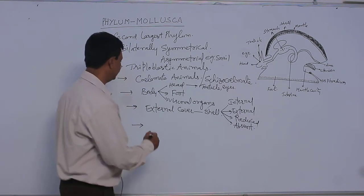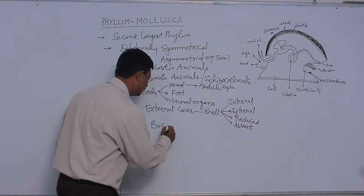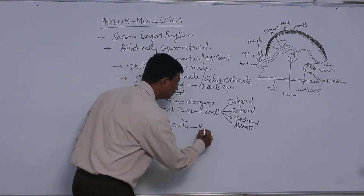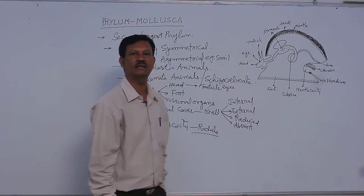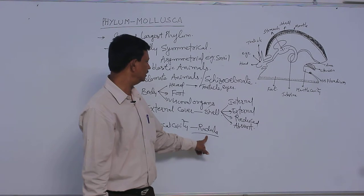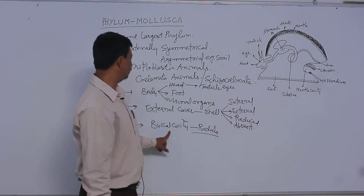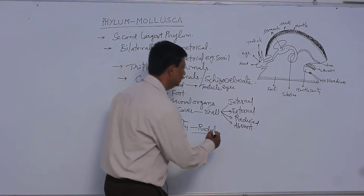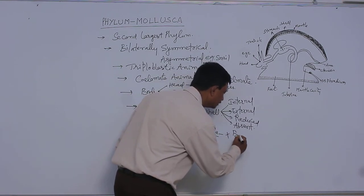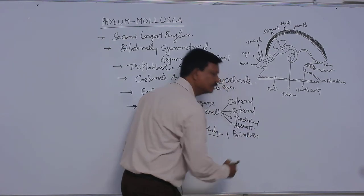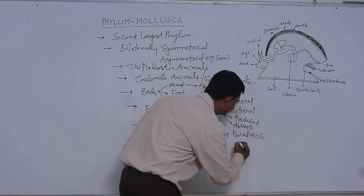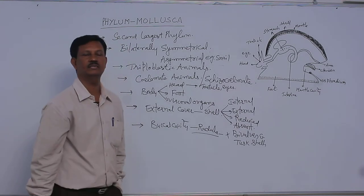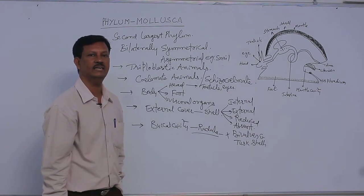Radula is present in the buccal cavity. In the alimentary canal, the buccal cavity possesses a radula — it is a rasping organ, just like our teeth. Radula acts as a rasping organ found in the buccal cavity. But in some animals, radula is absent — it is absent in bivalves, Unio, and tusk shells. In other molluscs, it possesses radula and acts as a rasping organ.